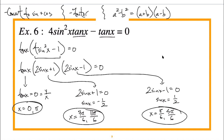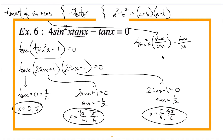Regarding the strategy of converting to sine and cosine for example six: if we tried that, we'd get 4sin²x · (sin(x)/cos(x)) − sin(x)/cos(x), and nothing cancels to make it simpler. It's not wrong, but it doesn't lead toward a solution efficiently. Factoring was the better choice here.